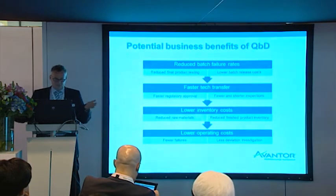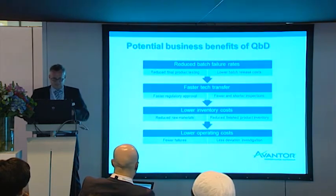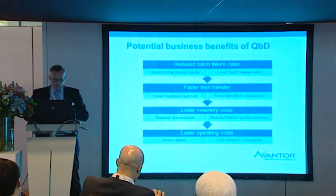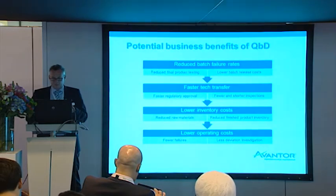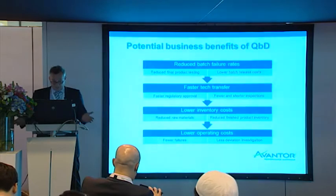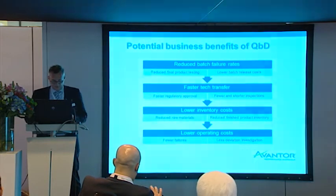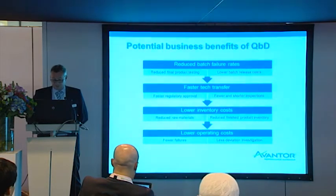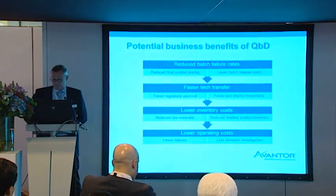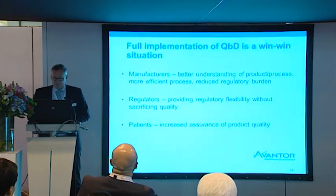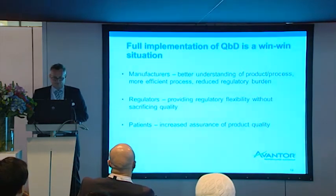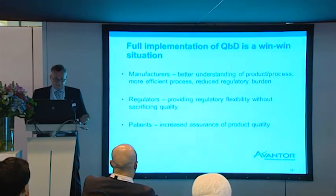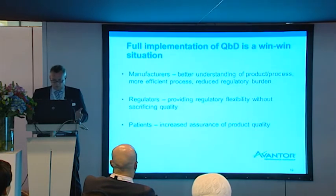What are the benefits for you when you buy raw materials developed by quality by design? It means you have a full understanding of all critical specifications and critical attributes that can influence quality. You have a fast tech transfer in your process because you already know a lot about the raw materials — you don't have to find it out yourself. At the end, you have lower operation costs, less deviation investigations, and less investigation overall. Full implementation of quality by design is a win-win situation — not only for the manufacturers of the raw materials, but also for the regulators and, most importantly, for the patients.